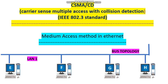In this video, I am going to explain about CSMA/CD, i.e., Carrier Sense Multiple Access with Collision Detection. It is a medium access method in Ethernet, also called the IEEE 802.3 standard.